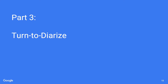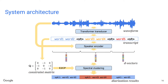Now that we've introduced the speaker turn detection model, I want to introduce how we build the Turn-to-Diarize system on top of it. After extracting log-mel filter bank energy features, we first feed them to the transformer transducer model to produce the transcript with the speaker turn token. These features are also fed into the speaker encoder, which produces a speaker embedding for each speaker turn. These embeddings are then fed into the spectral clustering algorithm.